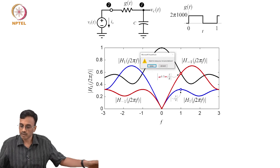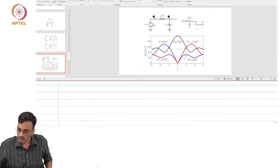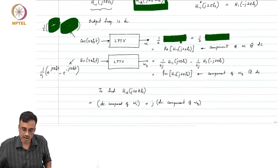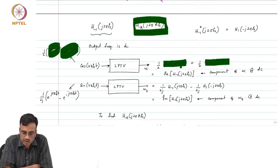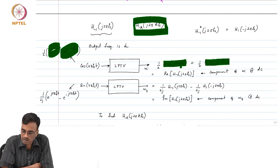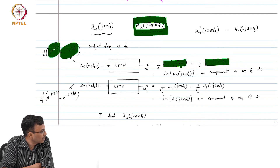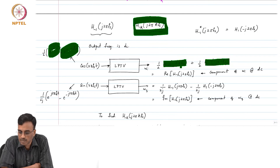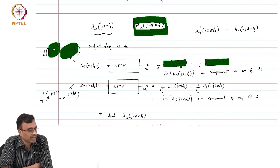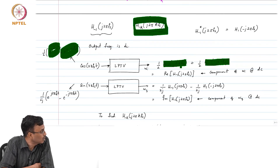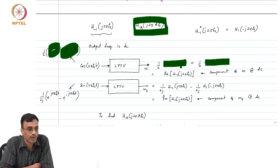In many practical situations — especially down-conversion — the question is how much signal aliases to DC. The simple trick is that for this special case, you do not need to find W_i·cos + W_q·sin, expand in Fourier series, and so on. You can simply look at the average values of W_i and W_q to get H_{-k}(j2πkfs).